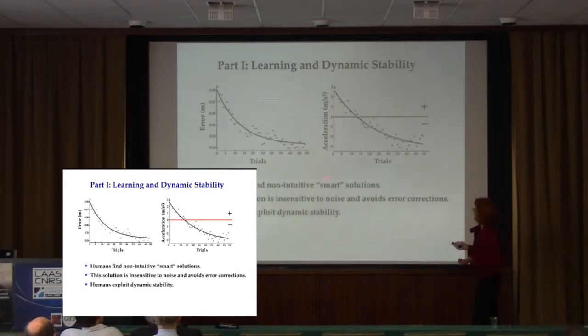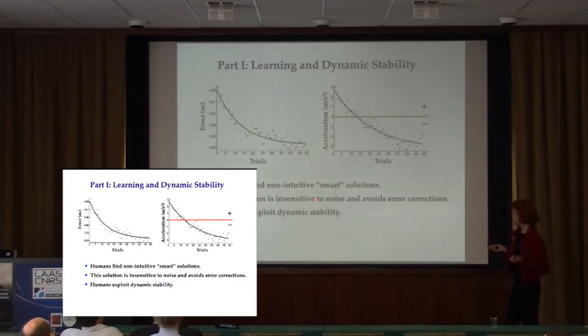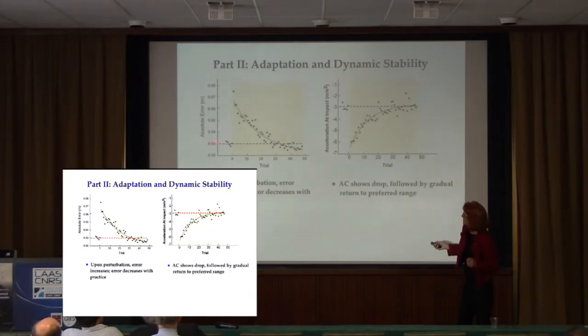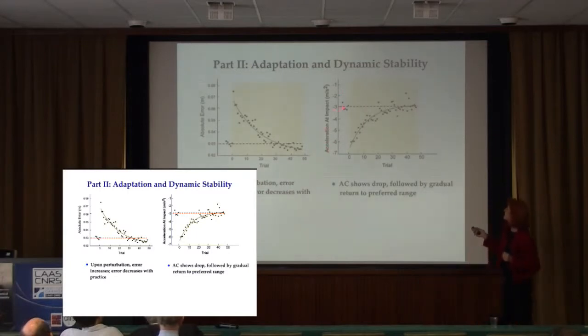And we take this as evidence that they found this dynamically stable solution where they don't have to correct at every bounce. So, importantly, as I said, humans find these seemingly non-intuitive, smart solutions, non-intuitive, because in the beginning they don't know those solutions. This solution is insensitive to noise and avoids active error correction. And humans do exploit this. Now, let's move on to part two. And without telling you the perturbation, I'll say 10 trials in the beginning, they have very good performance in terms of error. Then this constant perturbation is applied and the error shoots up. Then they learn and they settle back to this equally good performance. The acceleration, similarly, it begins at minus 3 meters per second squared as before from part one. The perturbation offsets them and then they gradually go back to this stable solution.